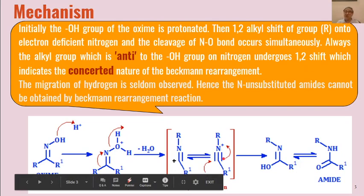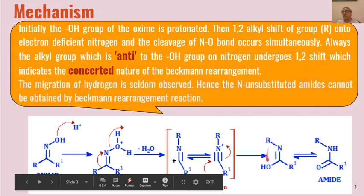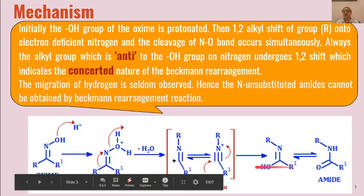Then water attacks the electrophilic carbon, and electron density is shifted, giving enolic structures containing a carbon-nitrogen double bond. These then undergo keto-enol tautomerism, and the enolic carbon-nitrogen double bond structures are converted into amides as the product. This is how oximes are converted into amides through these types of intermediates.